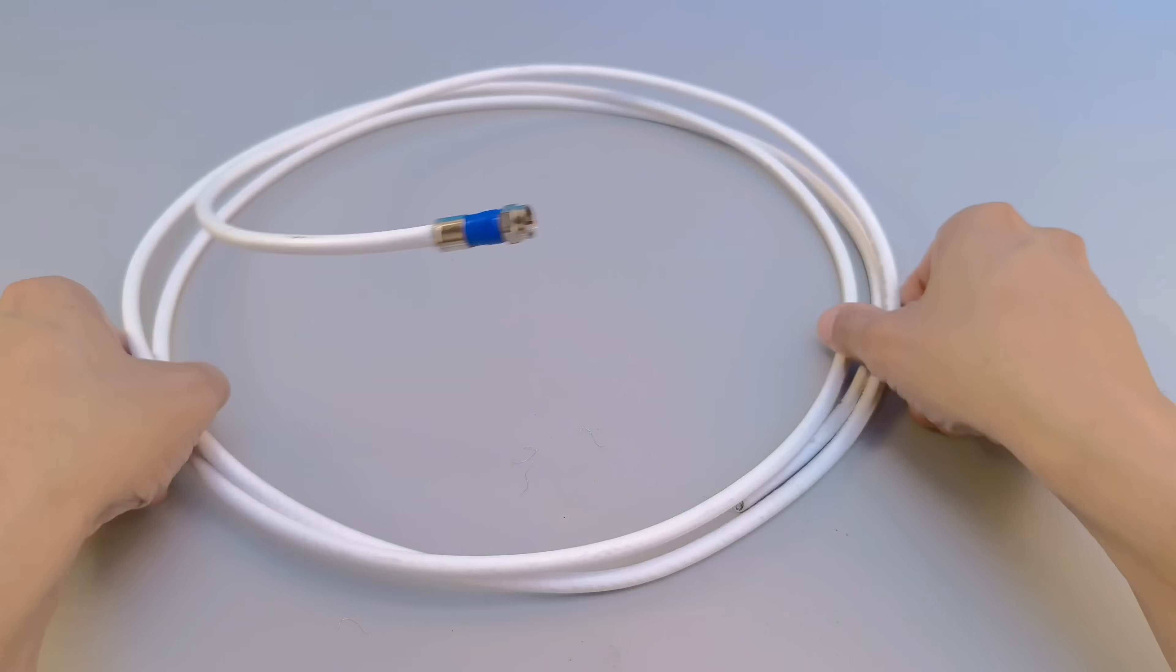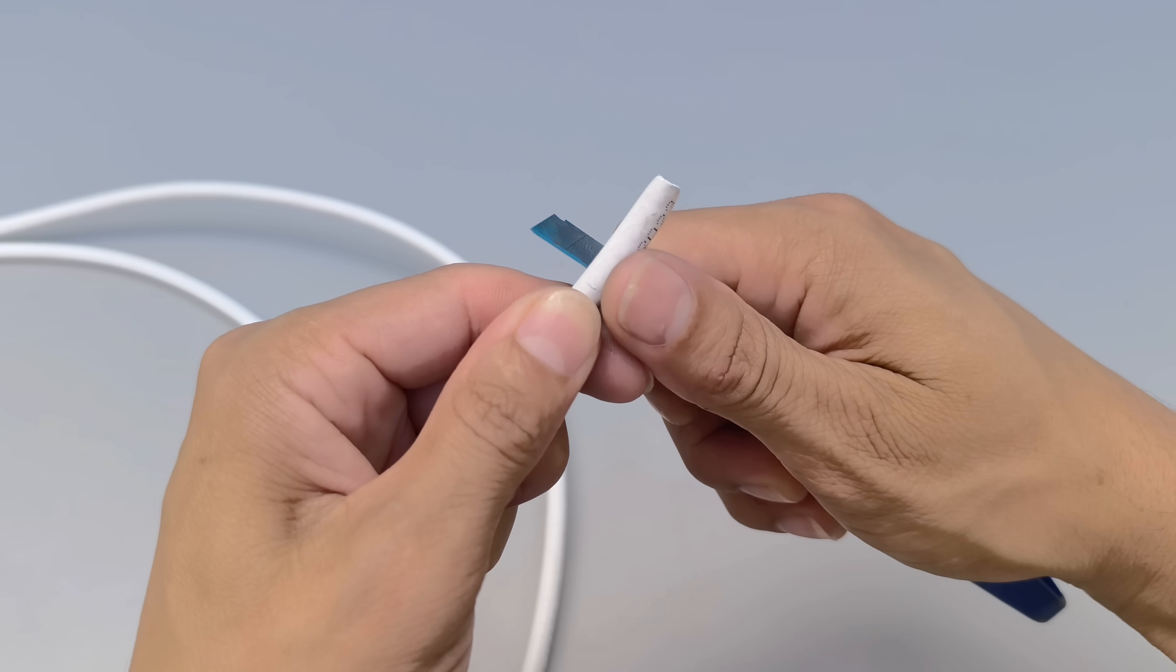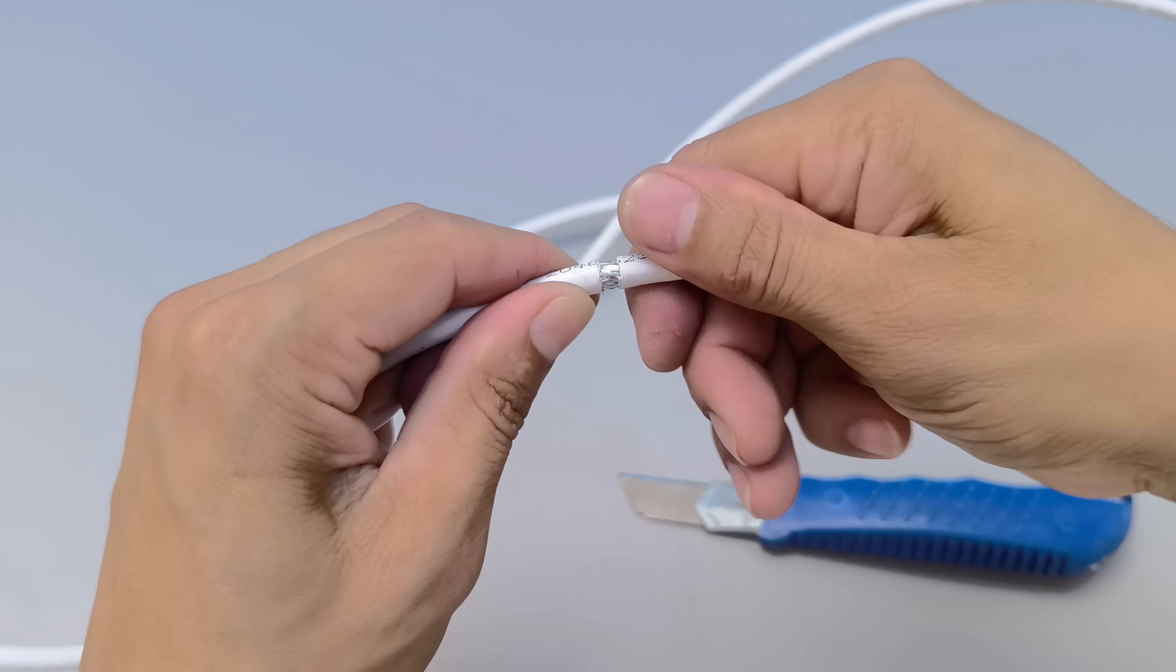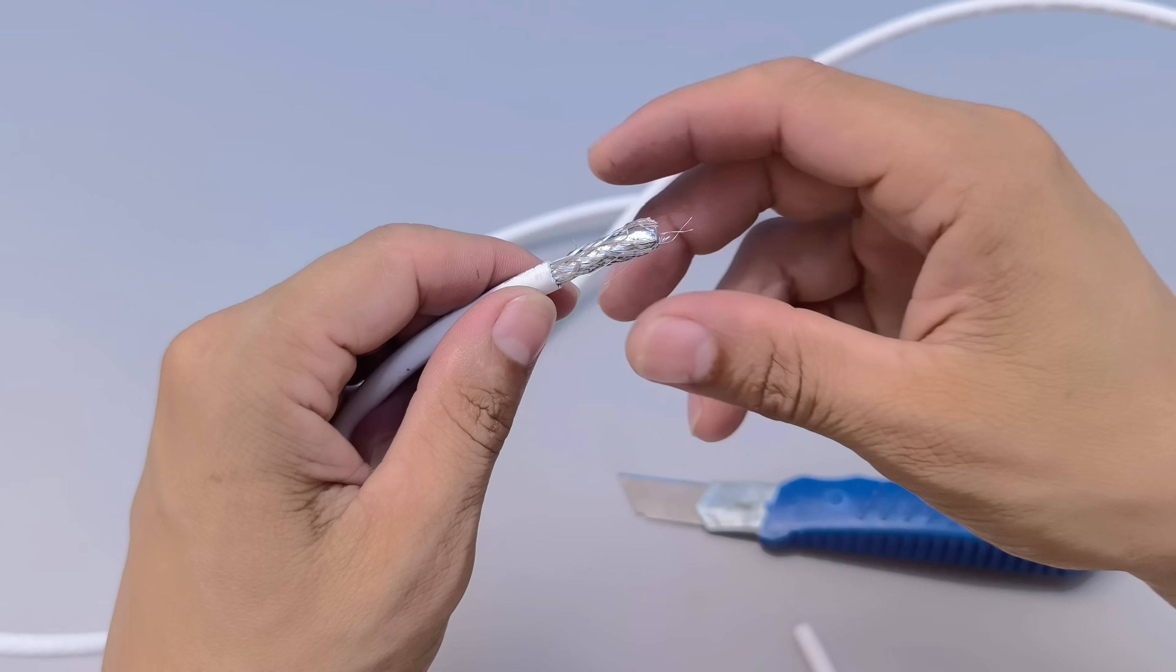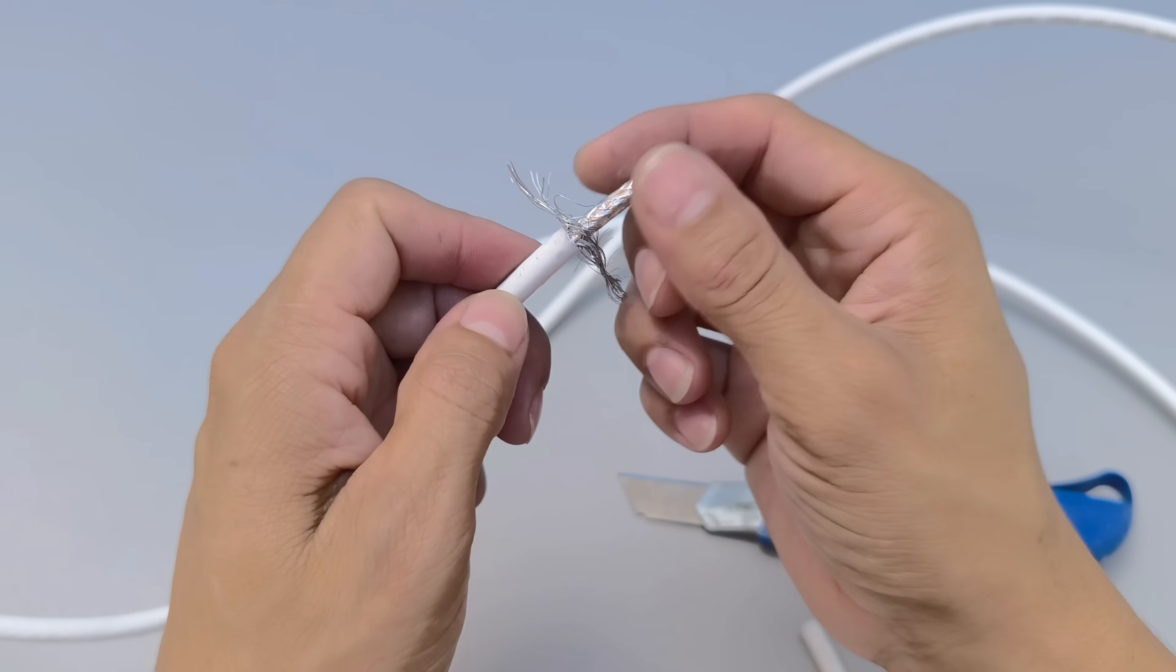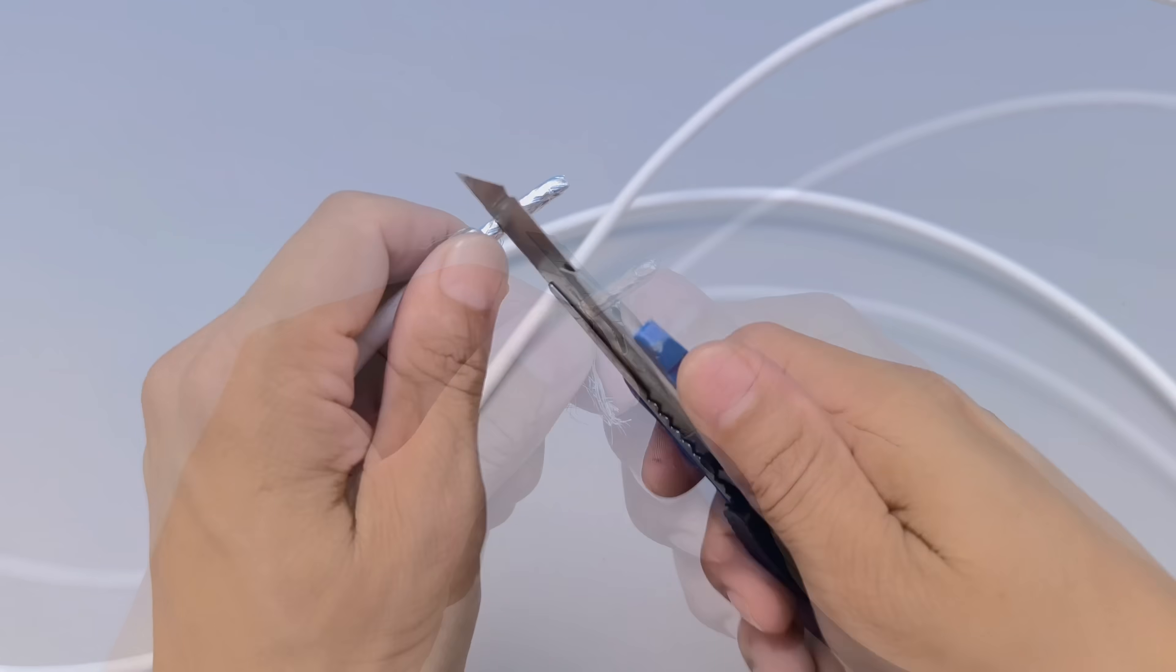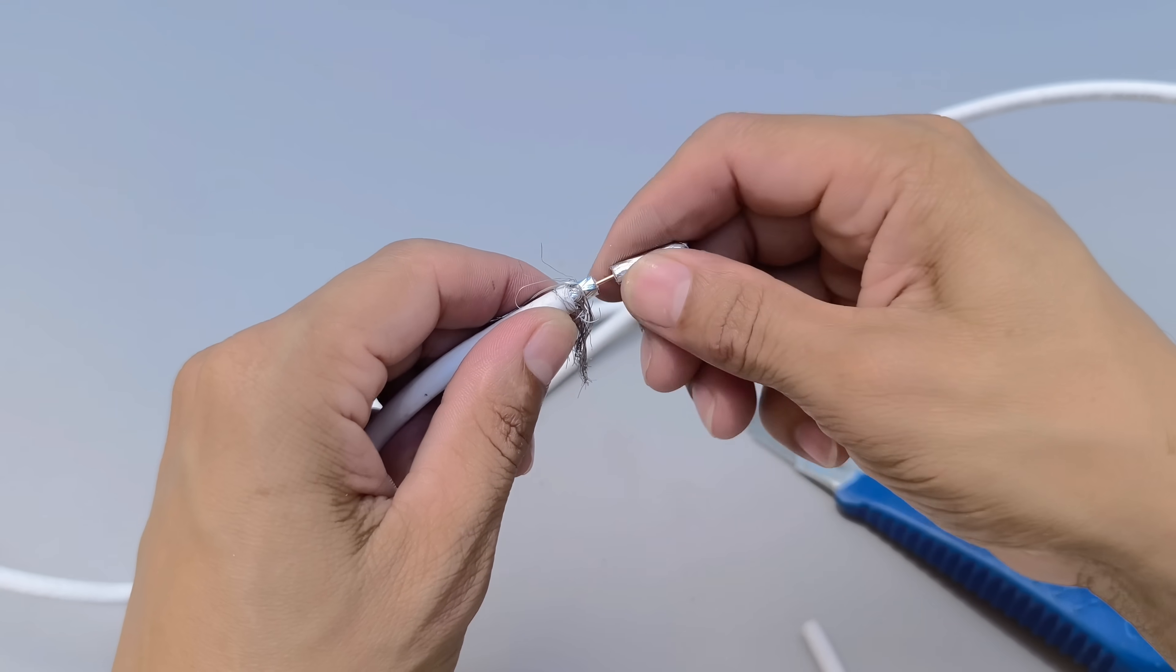Just below the shield, we find the dielectric insulator, which is an insulating material responsible for keeping the central conductor properly separated from the shield, ensuring that there is no short circuit and allowing the signal to travel efficiently. Carefully, we separate approximately 3 centimeters of these layers so that the central conductor and the shield are exposed, ready to receive the installation of the compression connector.